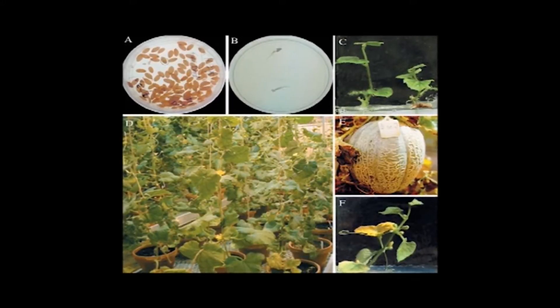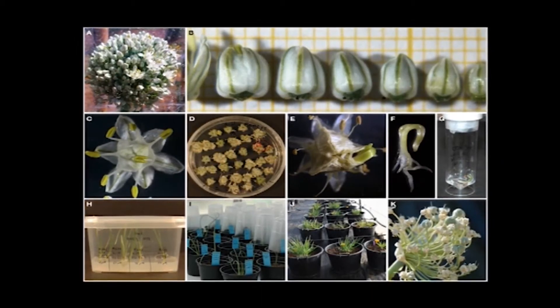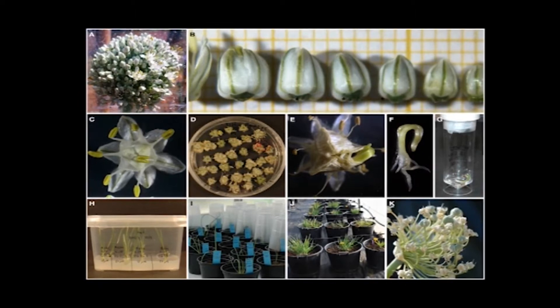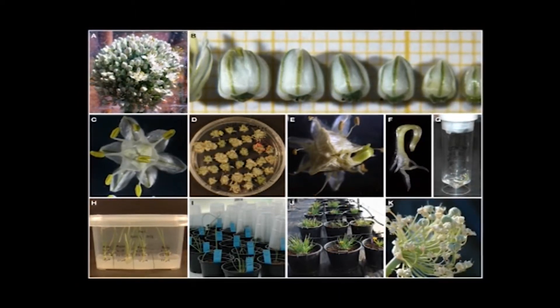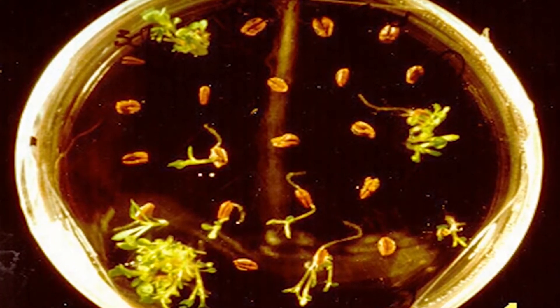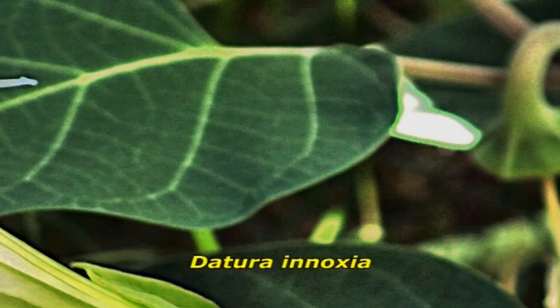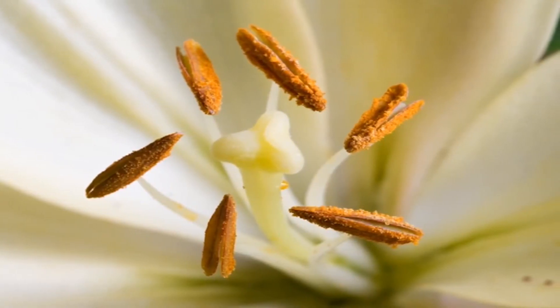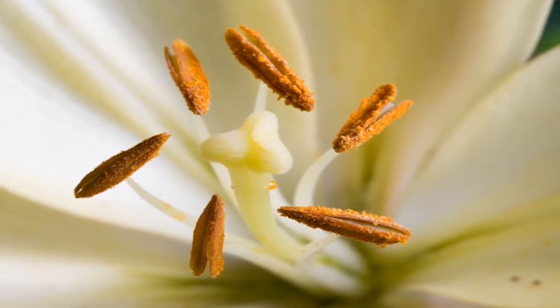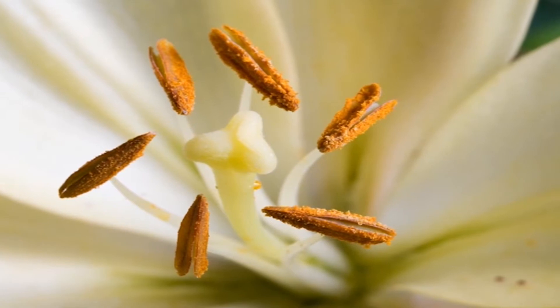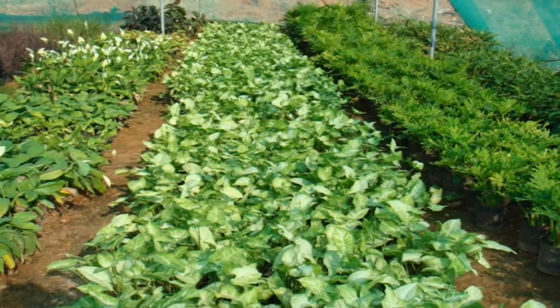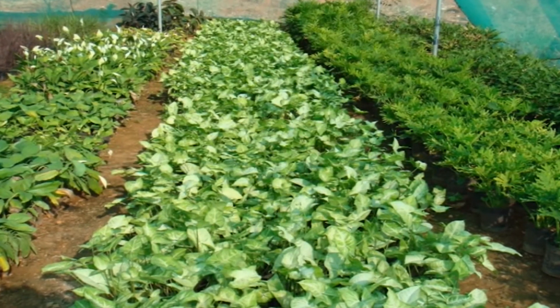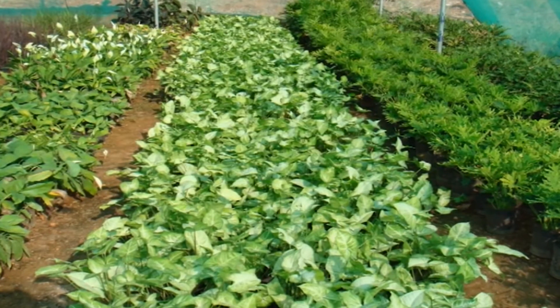Some of the advantages which make anther culture a valuable method for obtaining haploid plants: it is one of the easiest methods to develop haploid plantlets and is fairly simple. In some species, it is easy to induce cell division in the immature pollen cells. The induction frequency is very high in certain species such as Datura enoxia. More than 1000 plantlets were produced under optimal conditions from one anther, so large quantities of haploid plants can be produced in a short span of time.